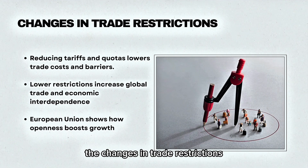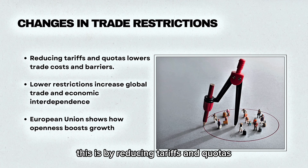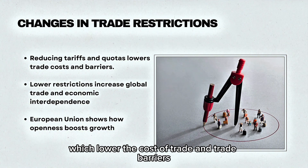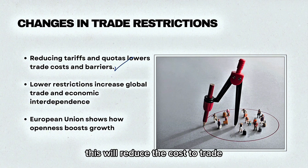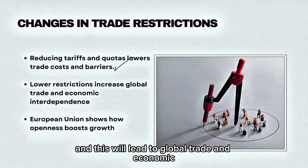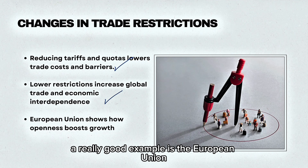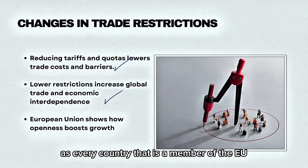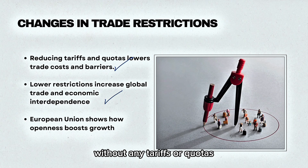Changes in trade restrictions have facilitated globalization by reducing tariffs and quotas, which lower the cost of trade and trade barriers. With lower trade barriers, this reduces the cost to trade and leads to global trade and economic interdependence. A really good example is the European Union, where every member country is able to trade freely with one another without any tariffs or quotas.